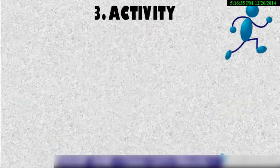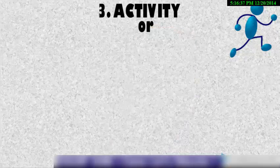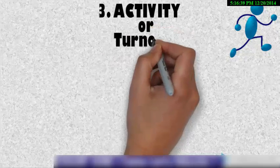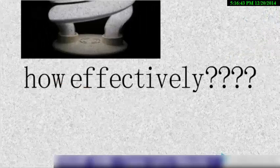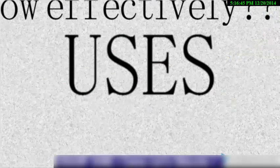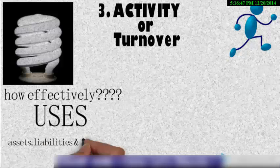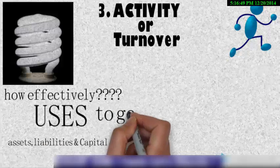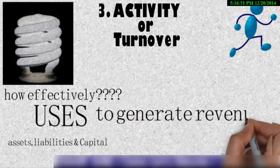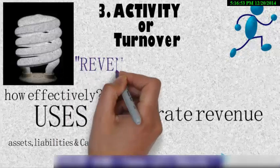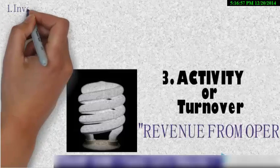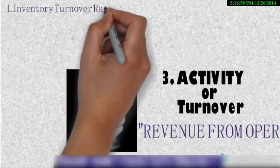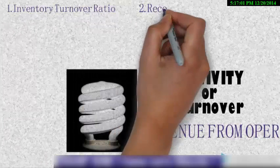Now comes the third category that is the activity ratio. The other name for the activity is the turnover ratio. Now this ratio tells us the firm's ability or how effectively they are using their resources, why they are using their resources to generate revenue. So the other name for this ratio can be revenue from operations.